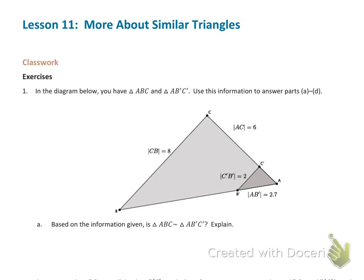For part A, you should have seen that there's not enough information given for us to know if triangle ABC is similar to A'B'C'. We have a common angle here at point A, but that's not enough to use angle-angle. Since we only have one angle, we need information about pairs of corresponding sides, and we don't have that information. So we can't check for similarity.